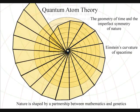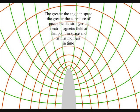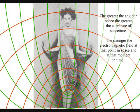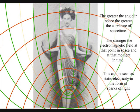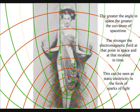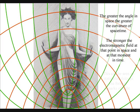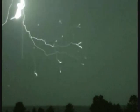The greater the angle in space, the greater the curvature of space-time, the stronger the electromagnetic field at that point in space and at that moment in time. This can be seen as sparks of light associated with static electricity. The atoms will even distort the geometry of space-time, creating electrostatic discharge in the form of lightning.